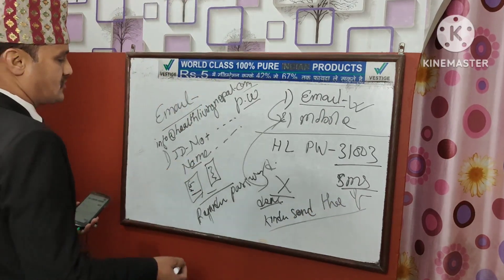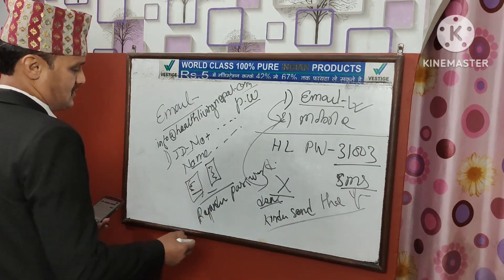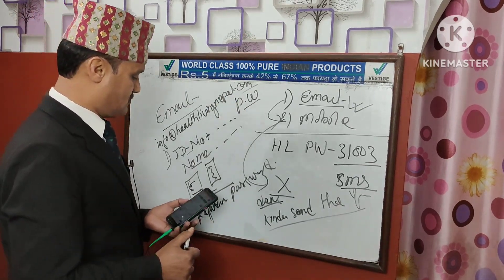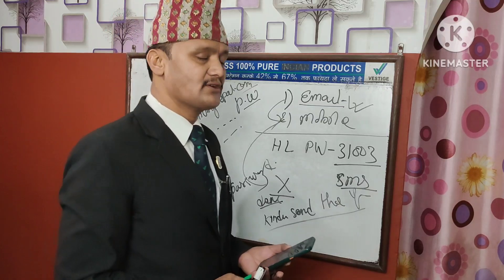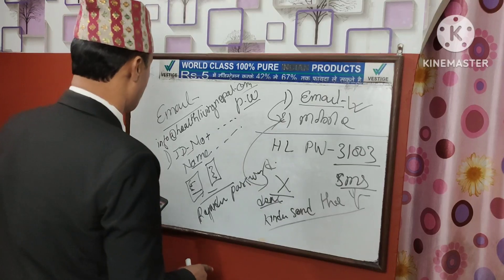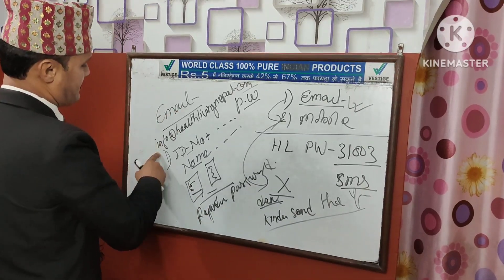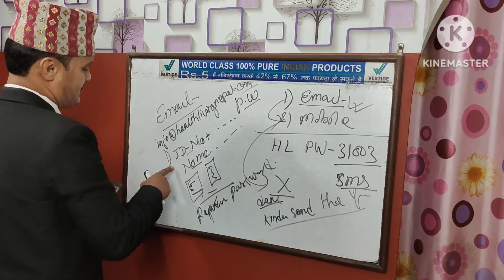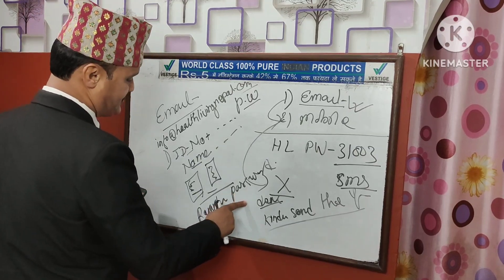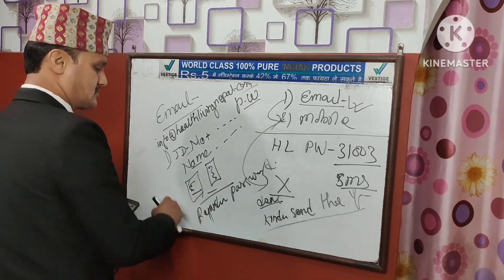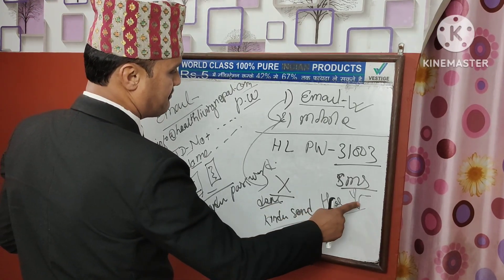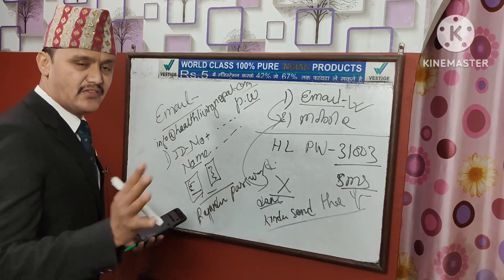You can write the password in your email. If you want to recover your password, you will get your password back. In the description write: Dear Sir, kindly send the password of this ID — regarding password, R-E-G-A-R-D-I-N-G regarding password. That is the description.